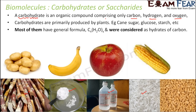Most carbohydrates have a general formula CxH2Oy and were considered as hydrates of carbon. Since the name was carbohydrates, it was thought that they are nothing but hydrates of carbon — that they would have carbon and a water molecule. It was considered that every carbohydrate would fall into this formula, with only the values of X and Y changing.